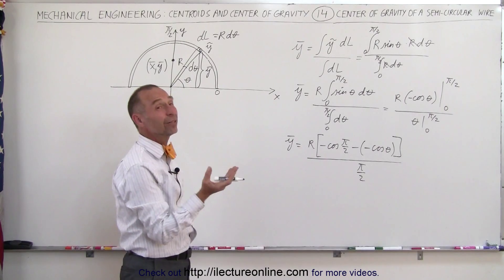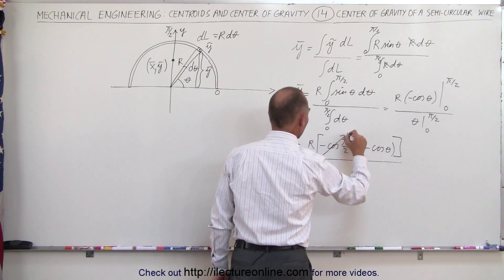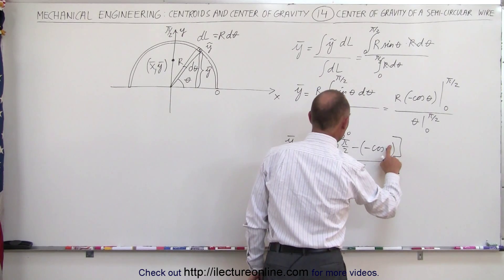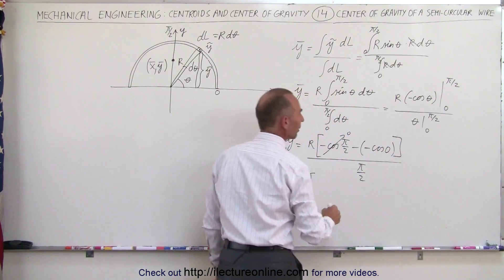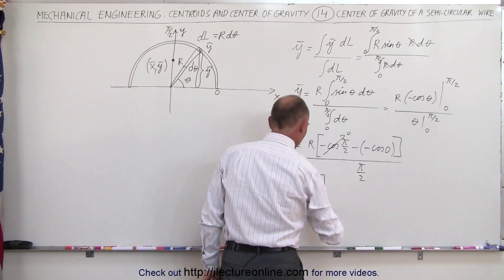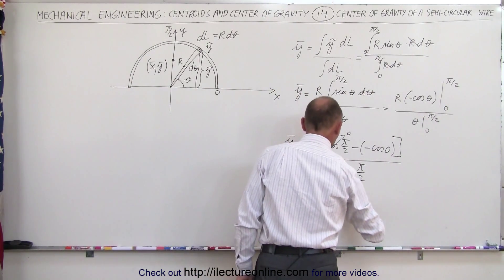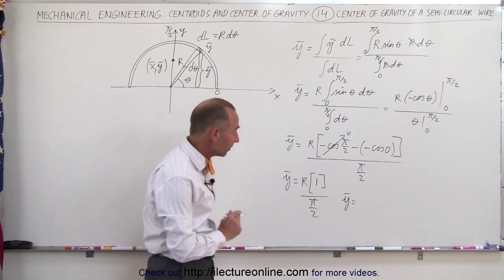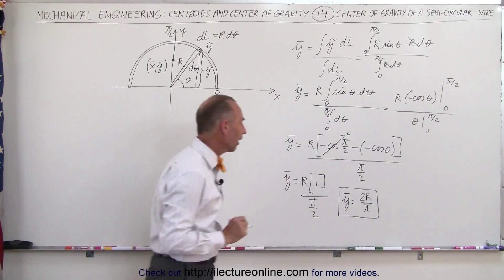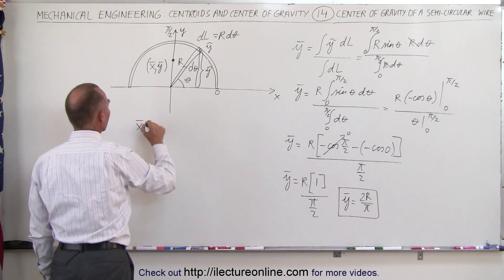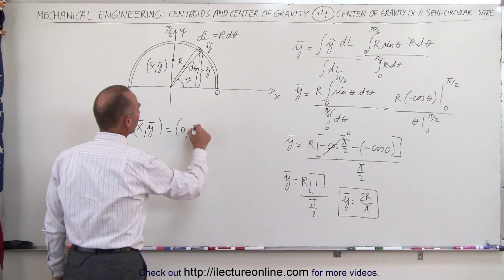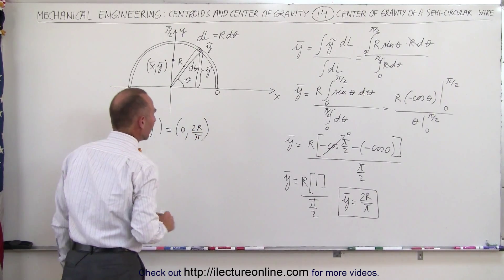The cosine of pi over 2 equals 0, so that term cancels. The cosine of 0 is 1, giving us negative times minus 1, which is positive 1. So y-bar equals r times 1, divided by pi over 2. Finally, y-bar — the y-coordinate of the center of mass — equals 2r divided by pi. So the full center of mass coordinates are x = 0, y = 2r/π. And that's how it's done.